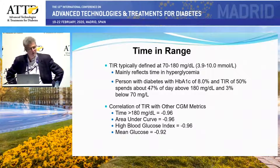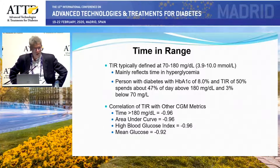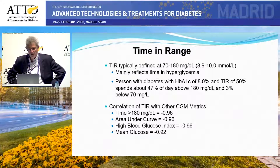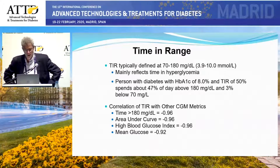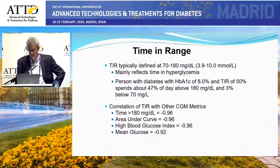It's important to recognize what will seem reasonably obvious: that it's really reflecting time in hyperglycemia. If we take a person with diabetes with a hemoglobin A1C of 8%, on average the time in range is going to be about 50%, and of that 50%, 47% of the day is going to be above 180 and 3% below 70.